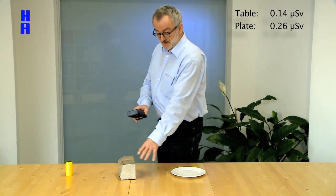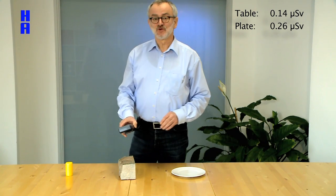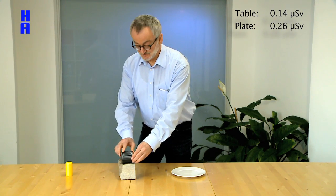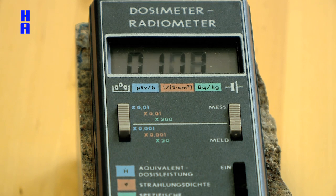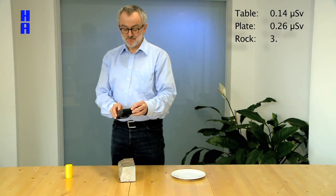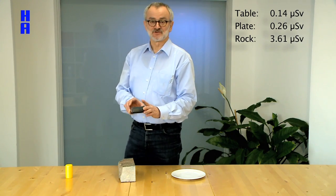And now we are coming to a rock found in one of German mountains and let's see what's going on there. The value here is 3.61 µSv.